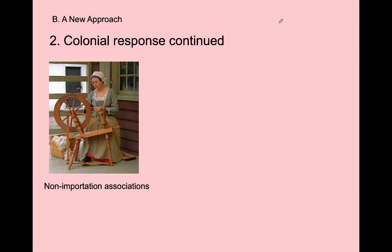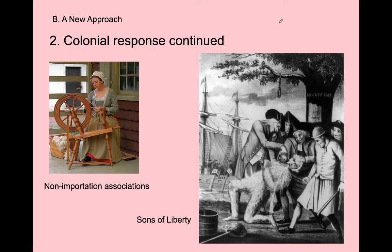The Sons of Liberty also come back. Made up of middle and lower class artisans, dock workers, and farmers, they are a more physical, confrontational protest group. They assault colonists who don't follow the boycott, as well as tax collectors and royal governors, ruling through fear. A regular colonist who might want to buy something from England won't, for fear of the Sons of Liberty. Revenue officers won't collect taxes for fear of being tarred and feathered or having their house burned. The Sons of Liberty are an effective scare tactic.